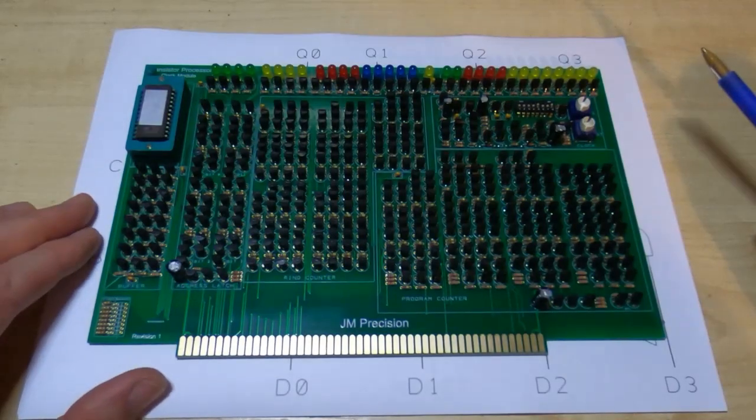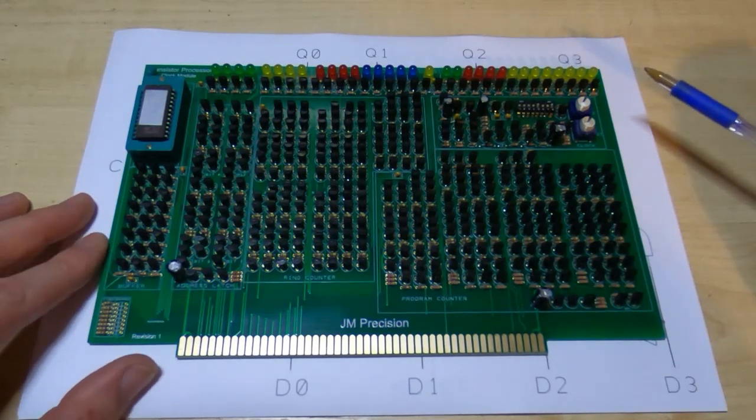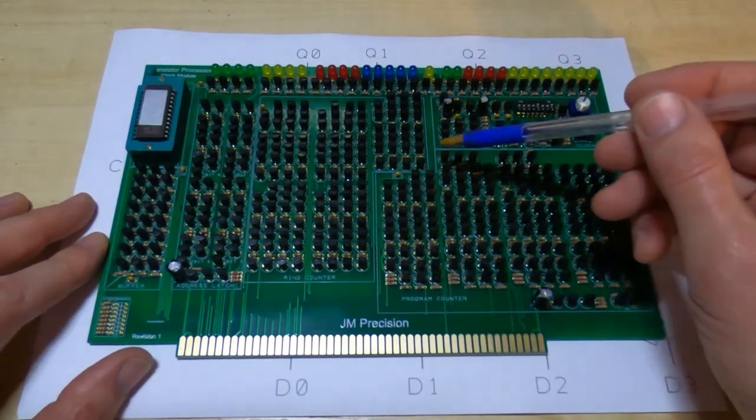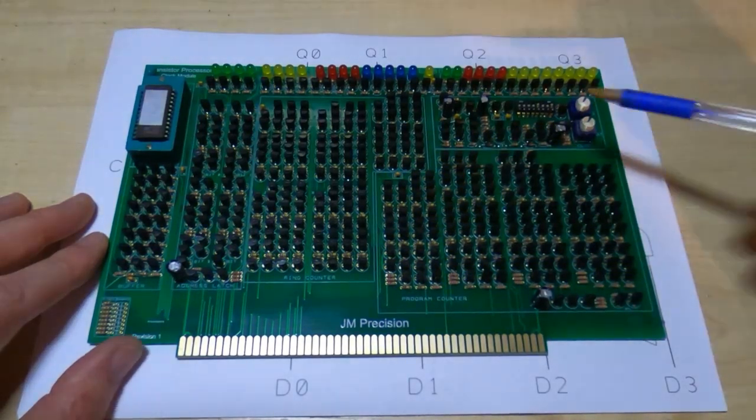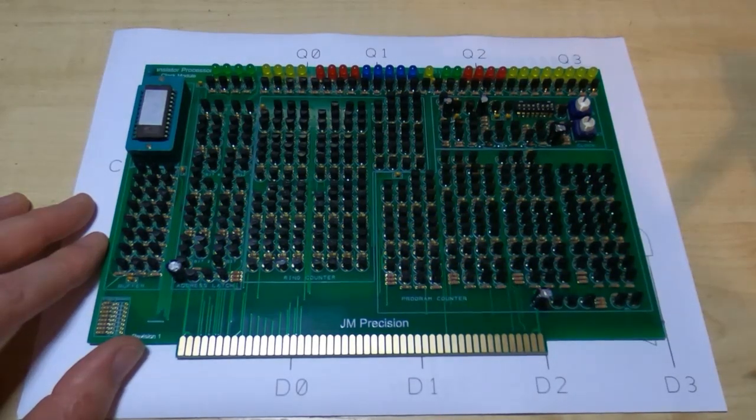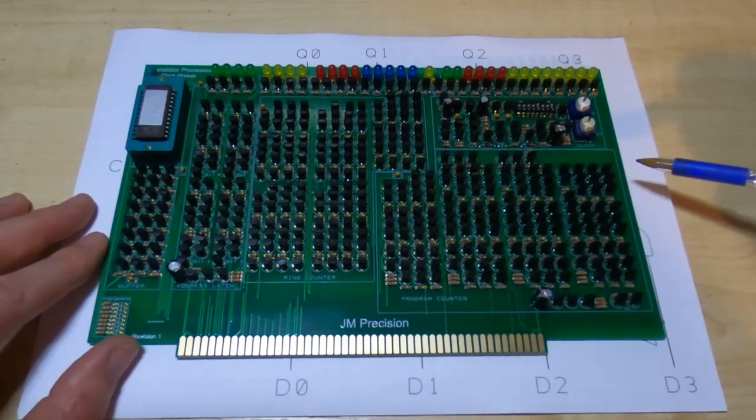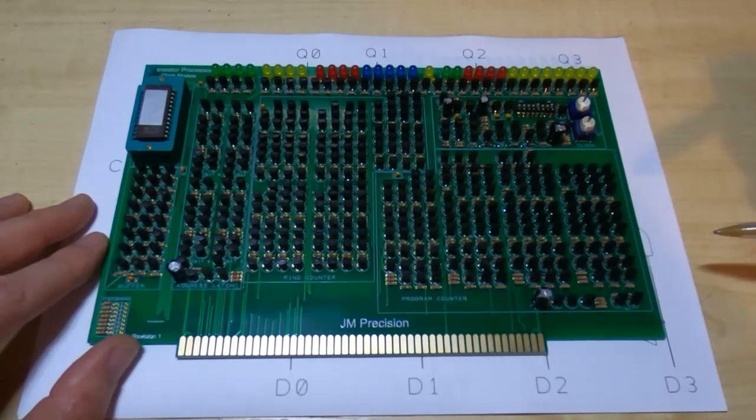Now one of the most complex circuits in the processor is actually the program counter and that occupies this area of the board. It doesn't look particularly large in its current form but the optimizations saved about 60 transistors from the design that would have been required had I not done that. So I'll quickly run through what the optimizations were.